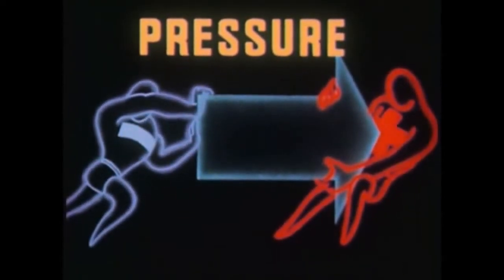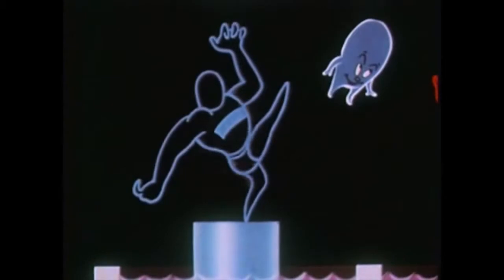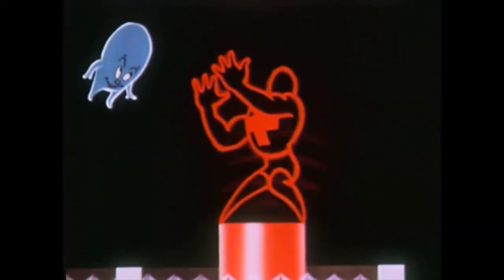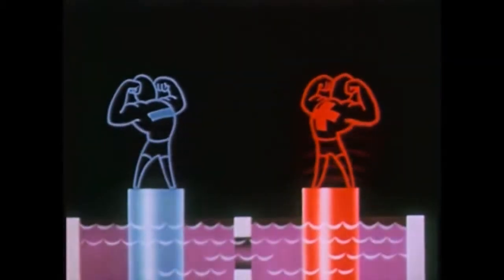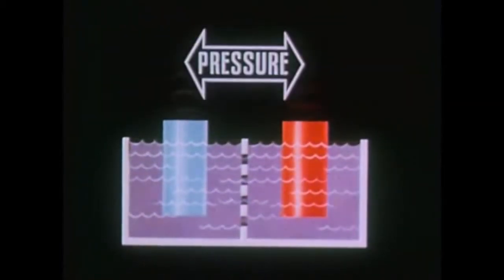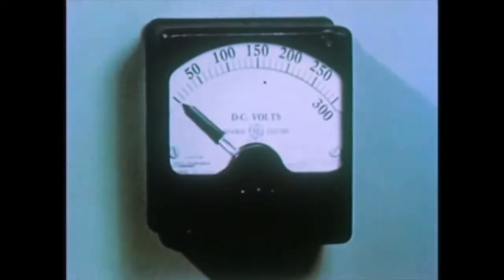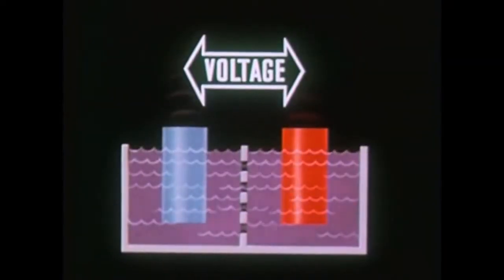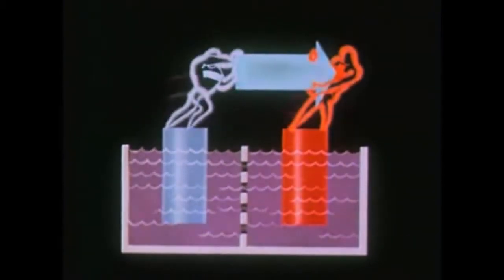First, let us consider pressure. With nature always trying to maintain an electrical balance, there is a tendency for any negatively charged object to repel its excess electrons, and for a positively charged object to attract electrons. This urge to maintain an electrical balance is potential electric energy. And since this potential energy is a repelling and attracting urge caused by opposite charges, its force or pressure is equal to the difference in the charges. It is called the difference in potential, or potential difference. The unit of pressure or potential difference is the volt.